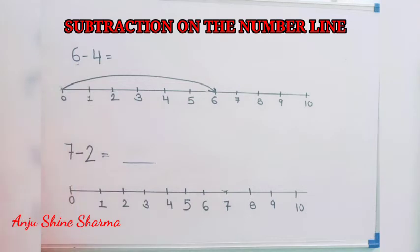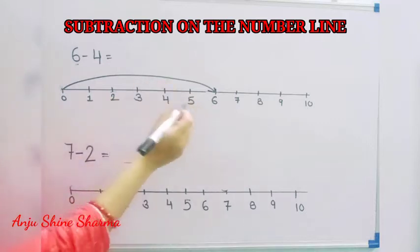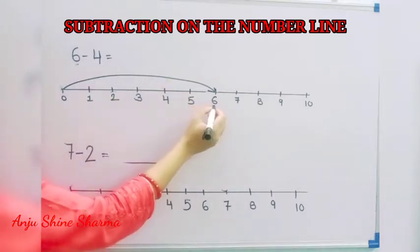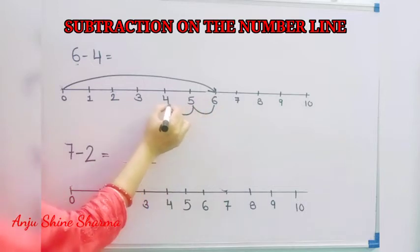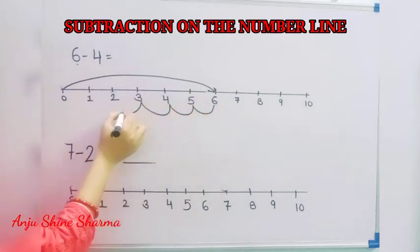Second number is 4, and you know very well in subtraction we always use backward counting. So we move 4 steps back from 6 like this: 1, 2, 3, and 4.